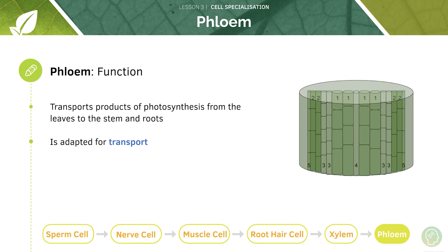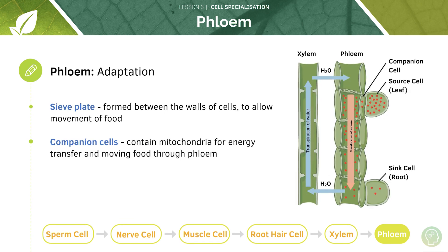Now let's contrast this to phloem. Phloem is involved in transport in plants. Whilst the xylem transports water and mineral ions, the phloem transports the products of photosynthesis through the plant. The phloem has to be adapted for transport — the phloem cell walls form a sieve plate as they disintegrate, and these sieve plates allow for the movement of food, so larger molecules can travel through the structure that is the phloem.